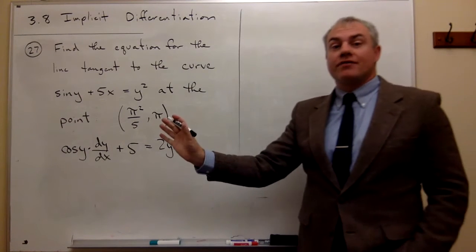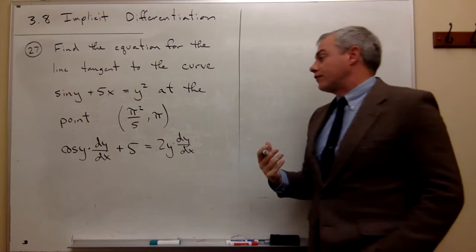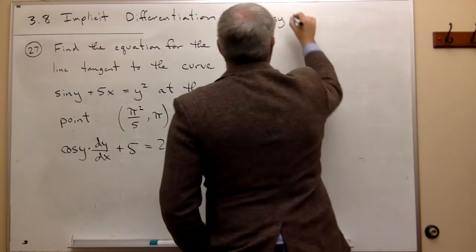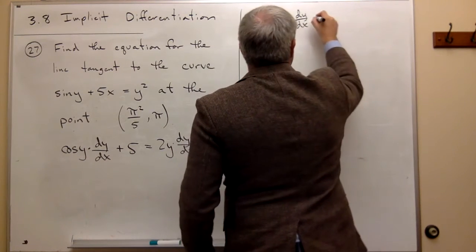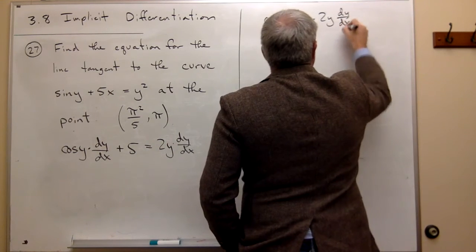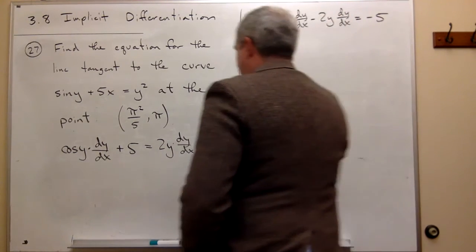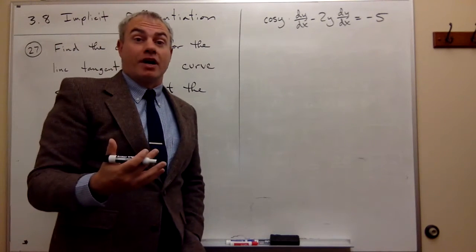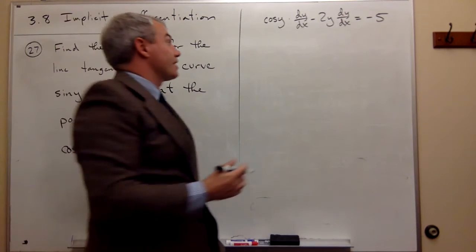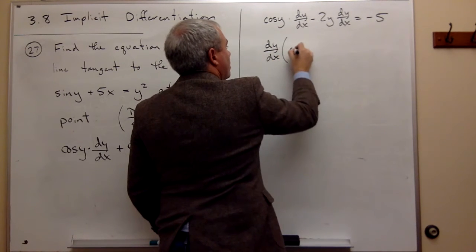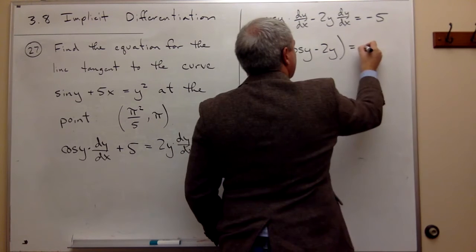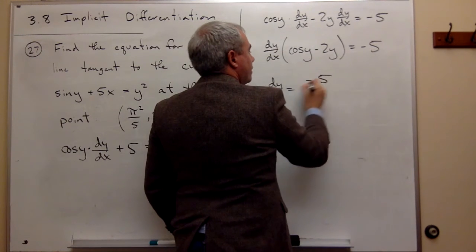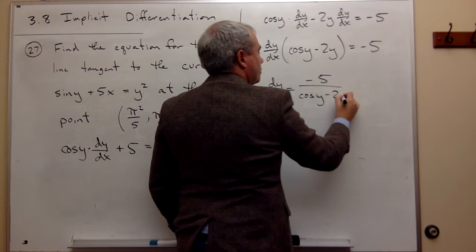Now let's get all the dy/dx terms on one side and everything else on the other side. So I get cosine y times dy/dx minus 2y times dy/dx equals negative 5. Now let's factor out dy/dx: dy/dx times (cosine y minus 2y) equals negative 5. So dy/dx equals negative 5 divided by (cosine y minus 2y).